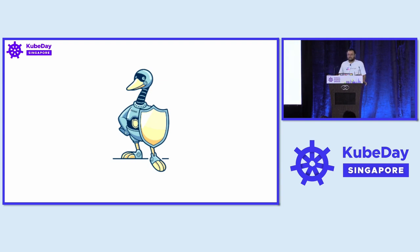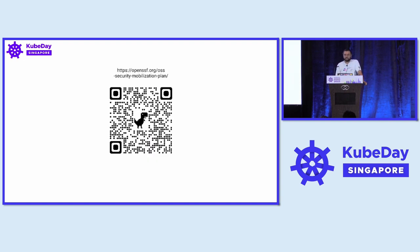I wanted to highlight the OpenSSF — the Open Source Software Security Foundation. They have a mobilization plan that goes into 10 streams of investment. Among these 10 streams, they advocate the use of S-BOMBs, they advocate the use of digital signatures, and they advocate creating more secure and more isolated build environments.